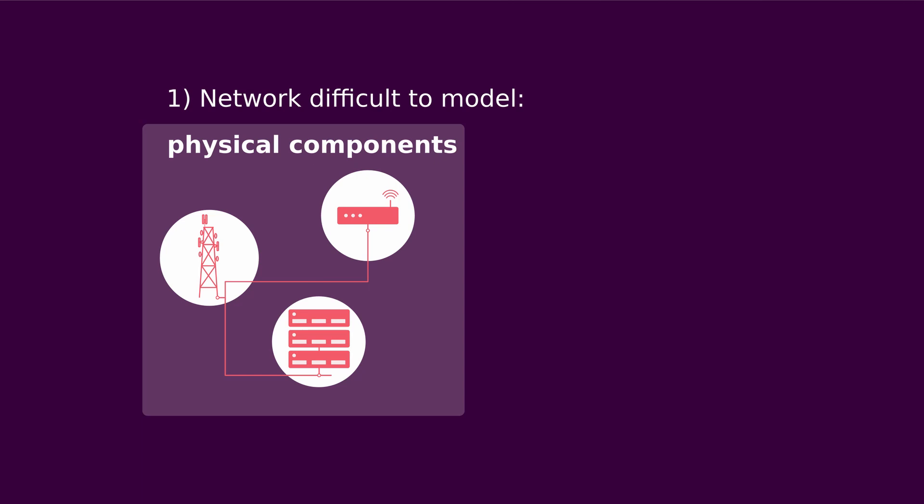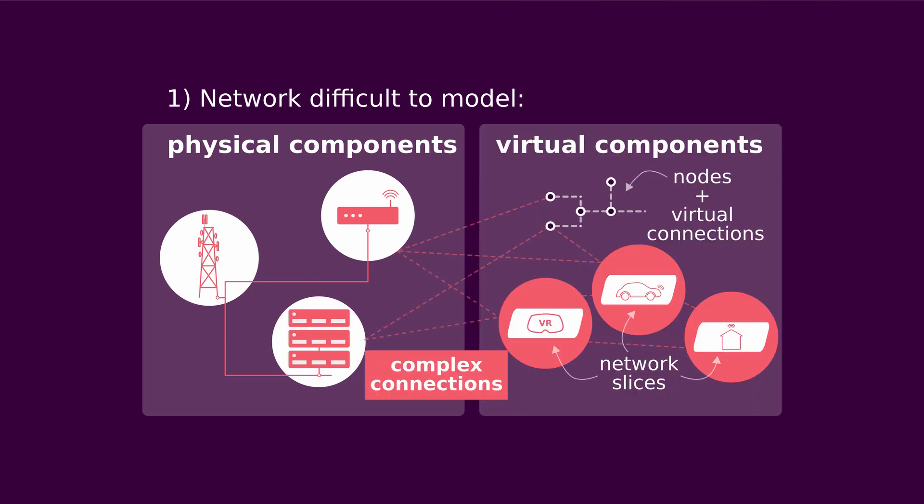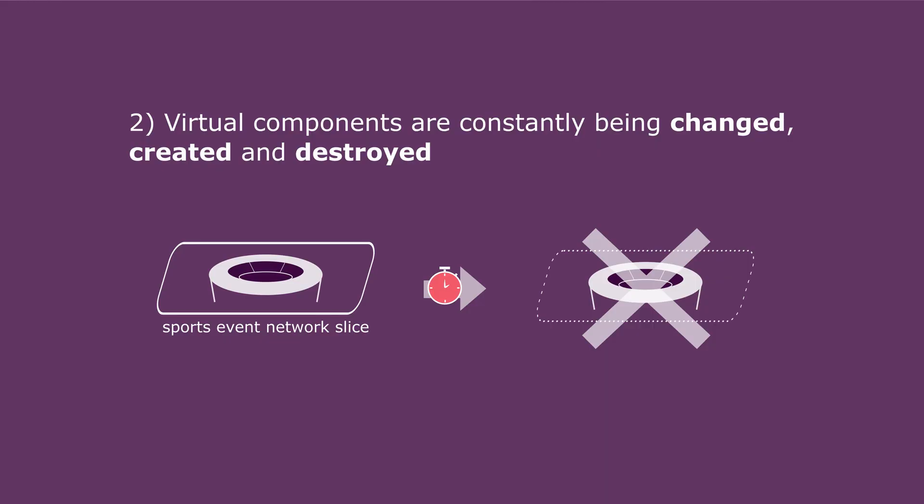But there are two main problems that make a network digital twin really difficult to design. Firstly, the network isn't just made of physical components like cell towers, servers and routers — it also contains lots of virtual components like network slices, virtual nodes and connections. These virtual components are constantly being changed, created and destroyed. For example, you might have a network slice set up just for a sports event and then deleted afterwards. This is happening at different times all across the network, so it's really hard to keep track of everything and how they're all connected together.